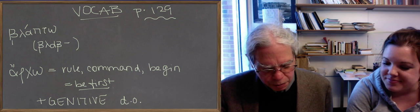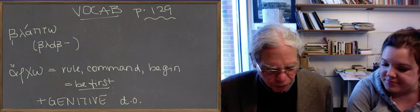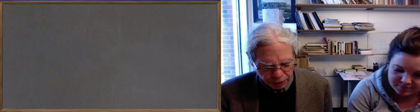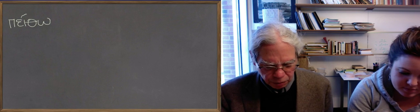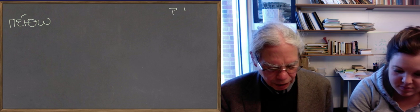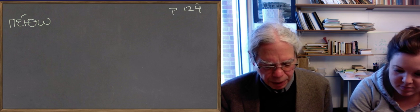There are two more verbs in this lesson. There's πείθω, which means persuade. πείθω, πείσω, ἔπεισα. A theta becomes a sigma when it's followed by an S. So it's πείθω, πείσω, ἔπεισα.